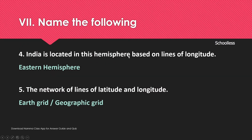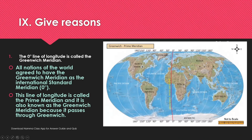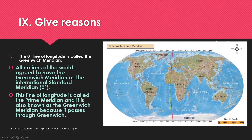India is located in the Eastern Hemisphere based on the lines of longitude, as India lies on the eastern side marked with E. Latitude-wise, India lies on the northern side, so it is also in the Northern Hemisphere.